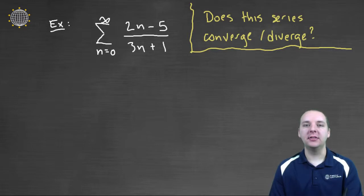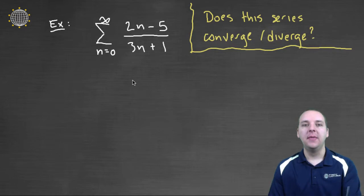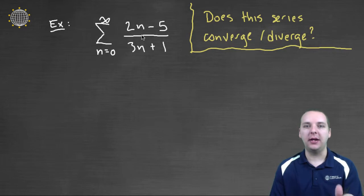Here we're being asked about the convergence of an infinite series. The series is the sum from n equals zero to infinity of two n minus five divided by three n plus one. So as we add up infinitely many terms from zero to infinity, do these terms add up to a finite amount, which means converge, or does it not add up to a finite amount, meaning the series would diverge?